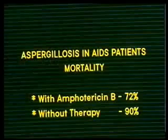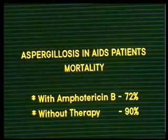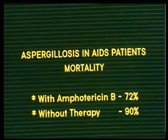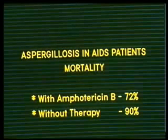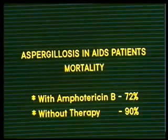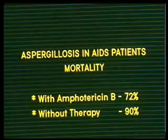This is a cutaneous lesion of aspergillus — nobody ever heard of cutaneous lesions of aspergillus before. This is a serious one: with amphotericin B, 72% mortality; without therapy, 90% mortality. We've got a newer drug licensed three or four years ago called voriconazole, and that's doing much better. Of course, it's going to take years before we know the relapse rates.